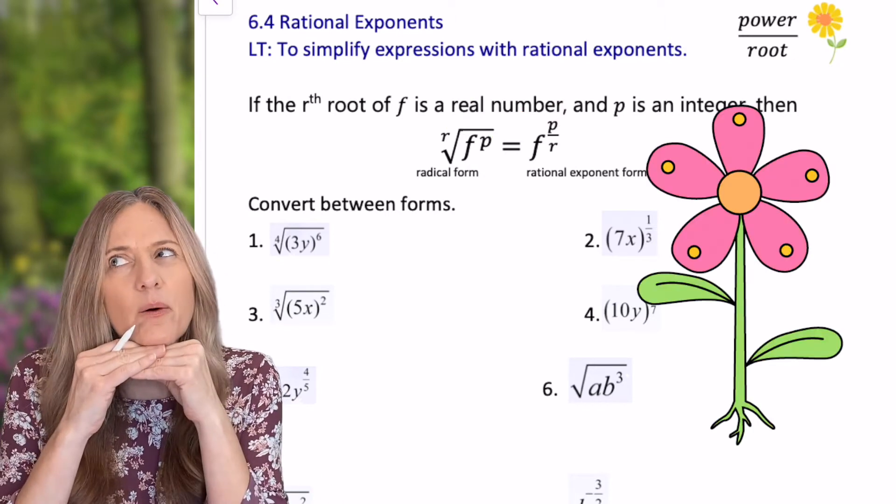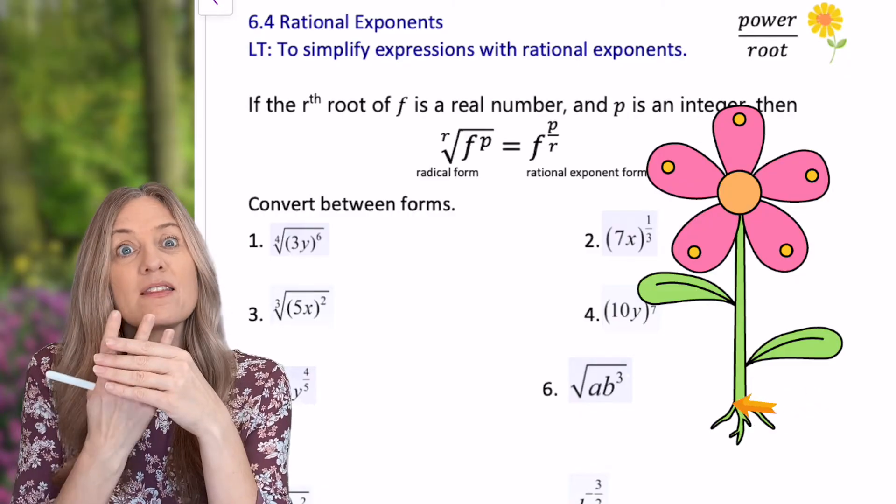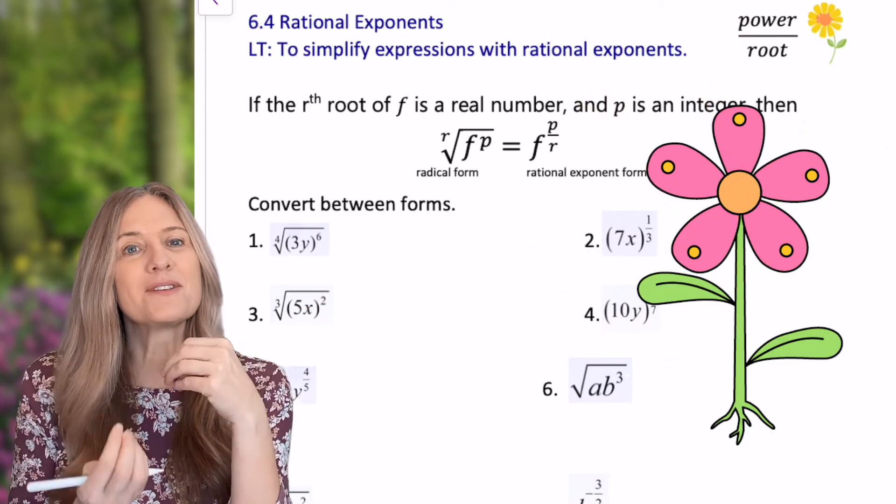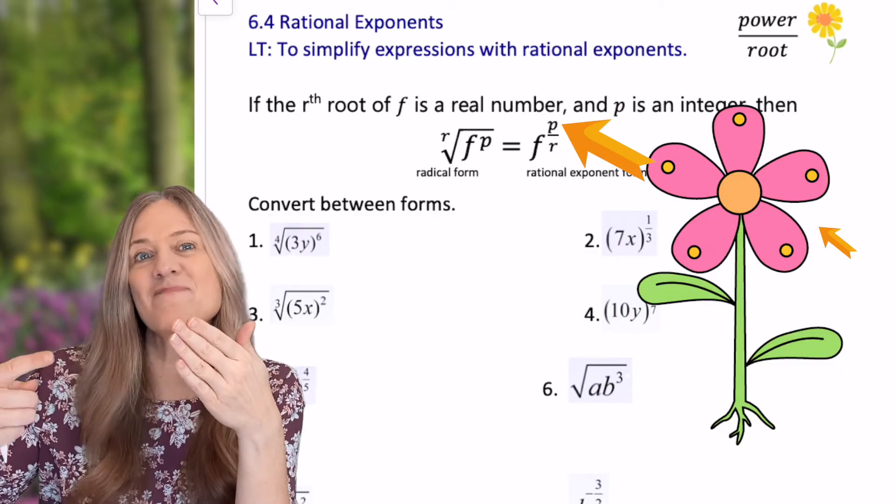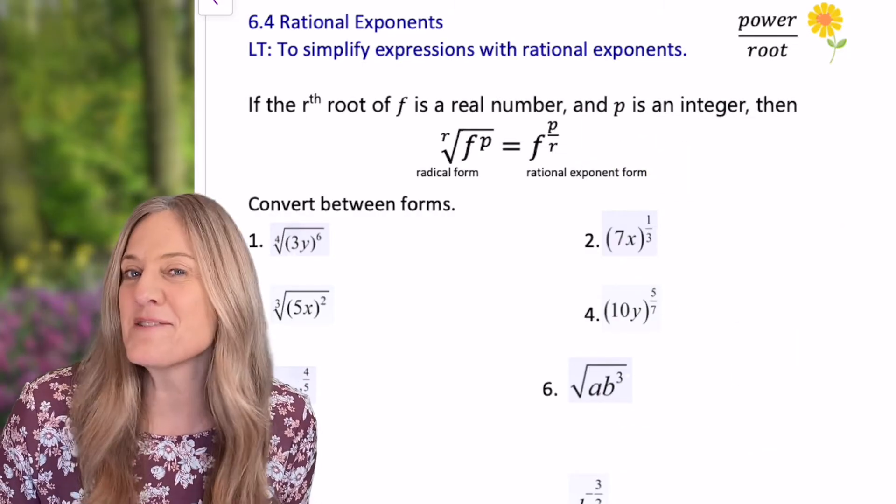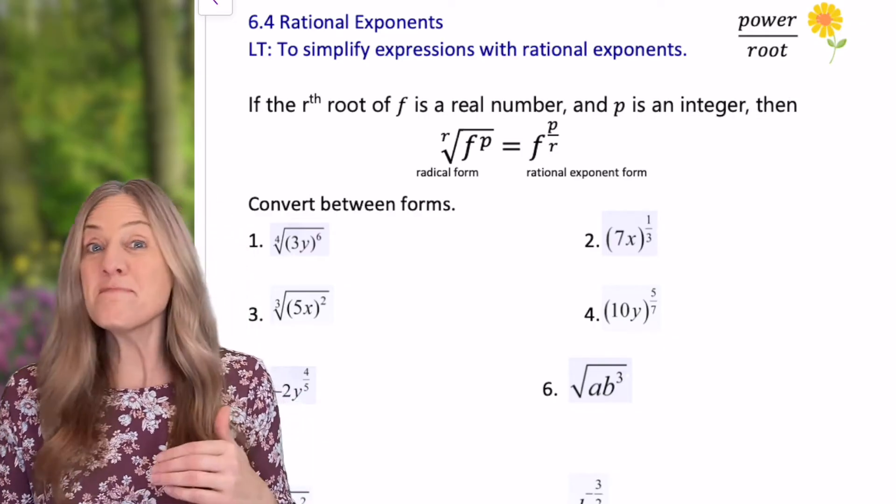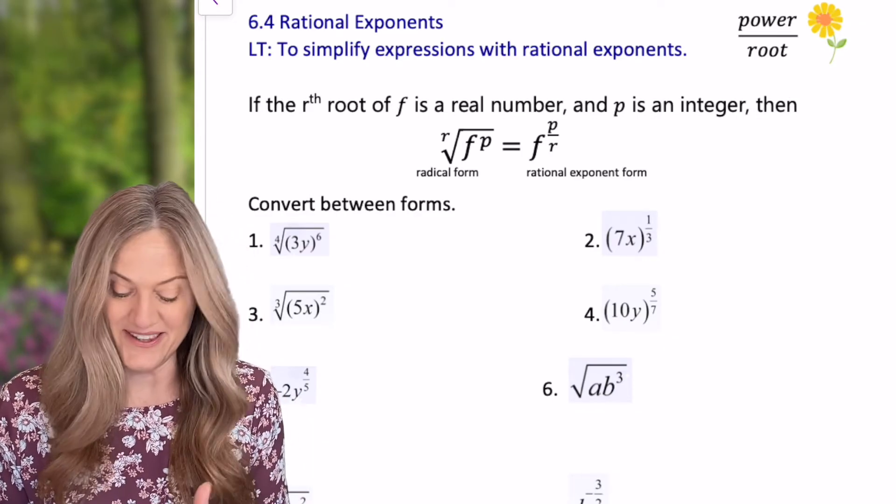If we have the rth root of f, which is a real number, and p is an integer and it happens to be the exponent, then we can rewrite it as f to the p divided by r. Now why am I using those variables? Well, p for power and r for root. And think about it. How does the flower grow? We have the roots and then the flower explodes, right? So the root is on the bottom and the flower has the power on top.